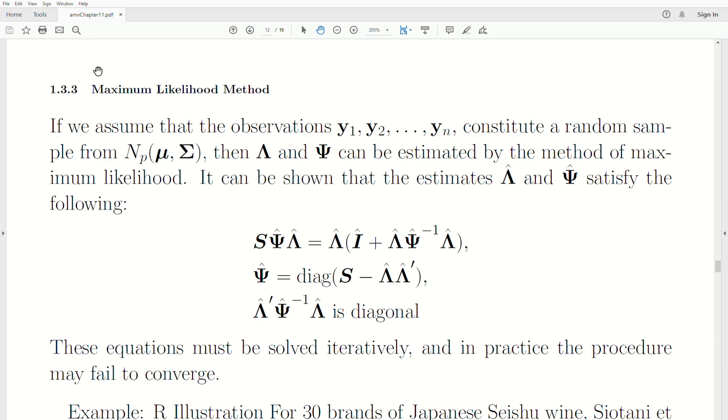Here we assume that the observations Y1 through Yn constitute a random sample from a multivariate normal distribution with mean vector mu and covariance matrix sigma. Then the model parameters lambda and psi can be estimated by the methods of maximum likelihood.